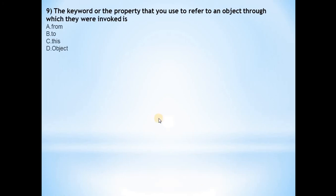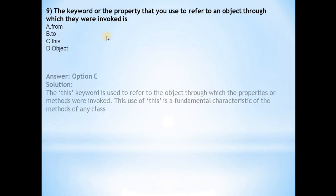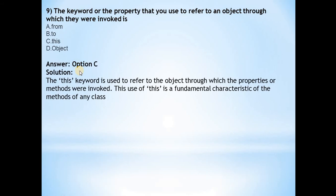The ninth question is: what keyword or property do you use to refer to an object through which it was invoked? The answer is this. The this keyword is used to refer to the object through which the properties or methods were invoked.